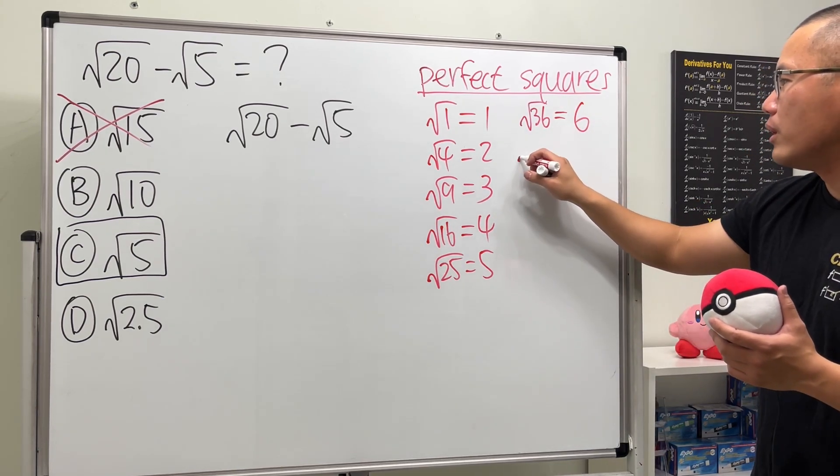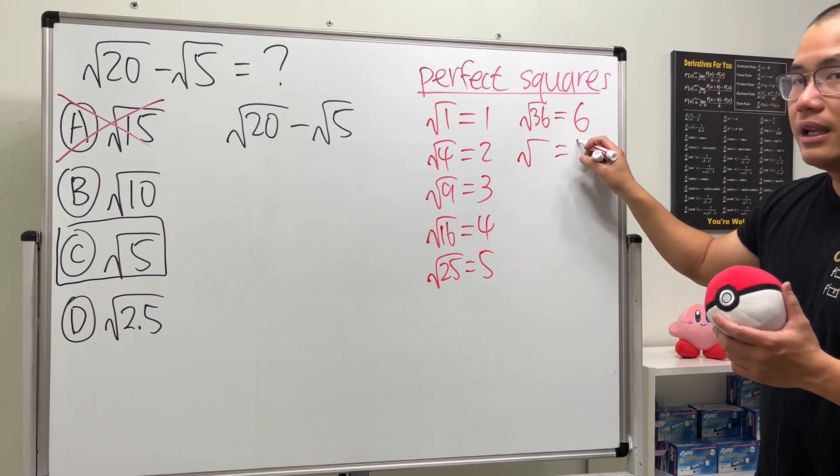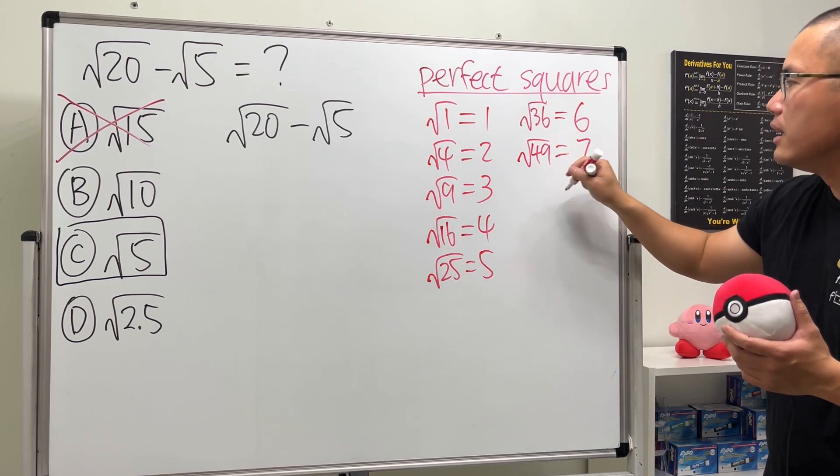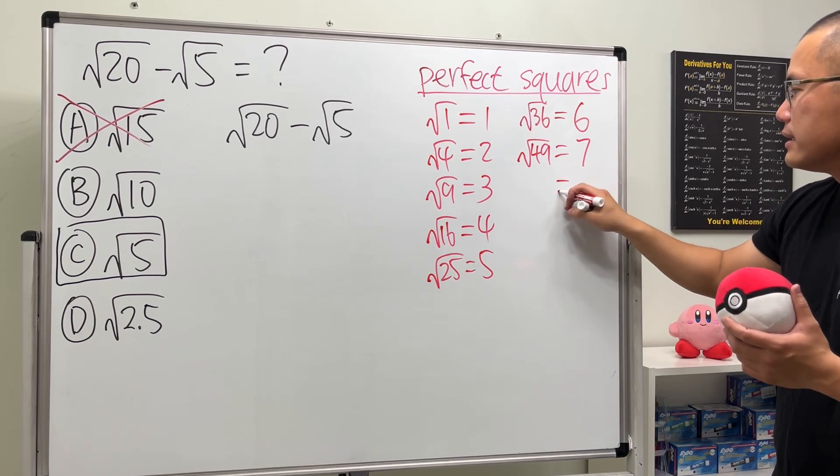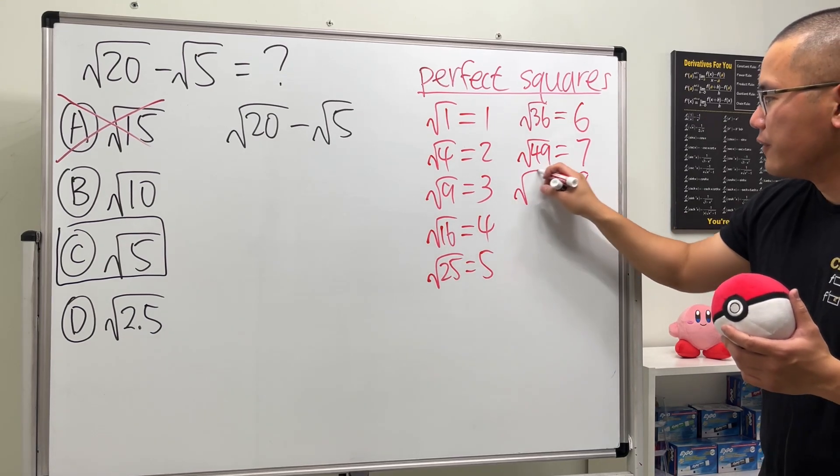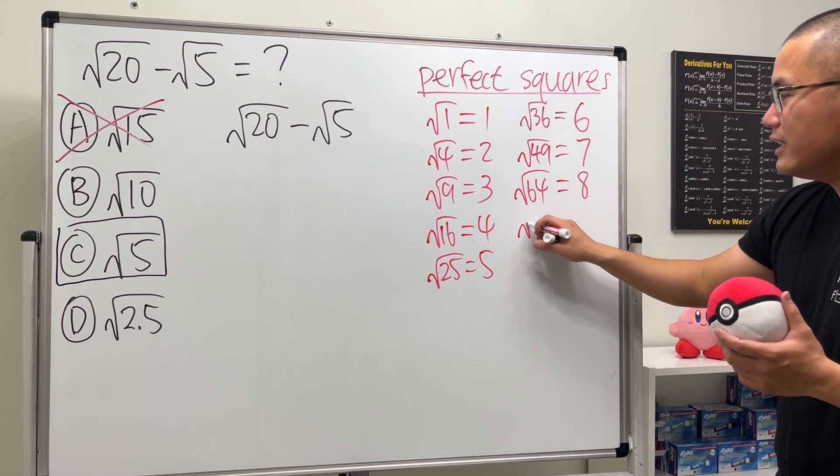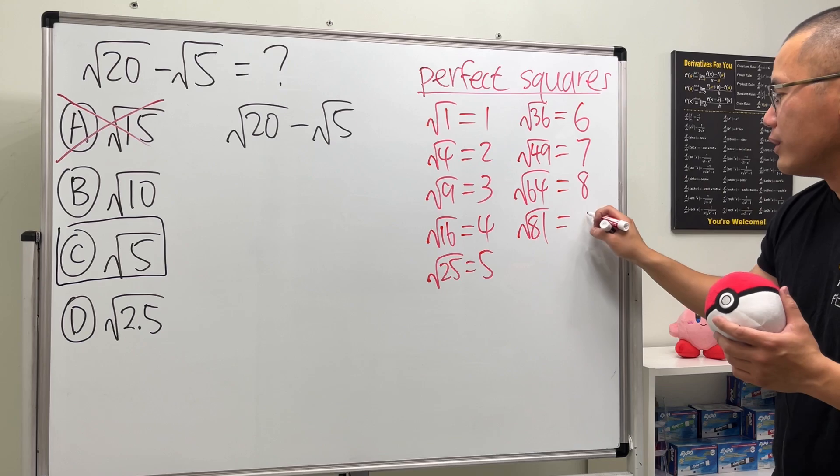And let's just practice a couple more. The next one is going to be what? 7. 7 times 7 gives you 49. So square root of 49 is 7. And the next one is 8. 8 times 8 is 64. Square root of 64 is 8.